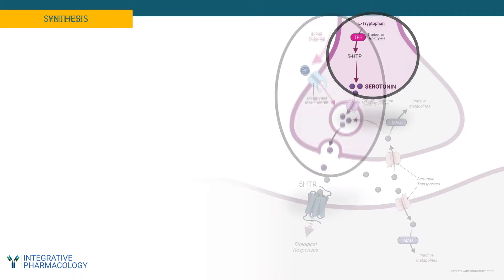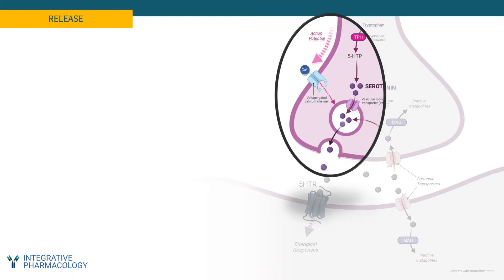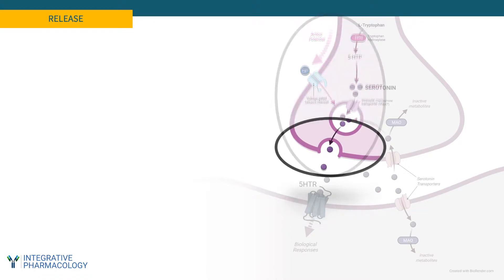Once serotonin is made by the presynaptic neuron, it enters vesicles via a monoamine transporter, and the vesicles will store serotonin until an action potential arrives at the nerve terminal. That action potential triggers a voltage-gated calcium channel that lets calcium ions into the cell, and that ion entry stimulates the fusion of the vesicular membrane with the cell membrane and the release of the neurotransmitter into the synaptic cleft.